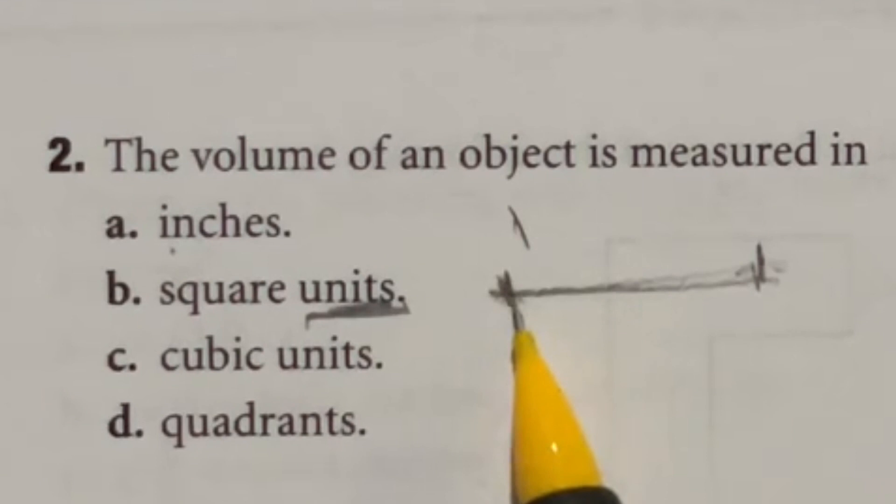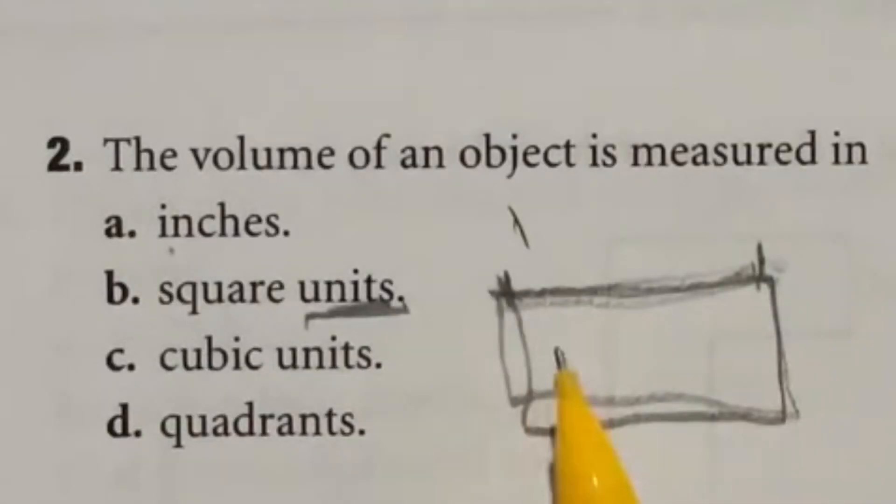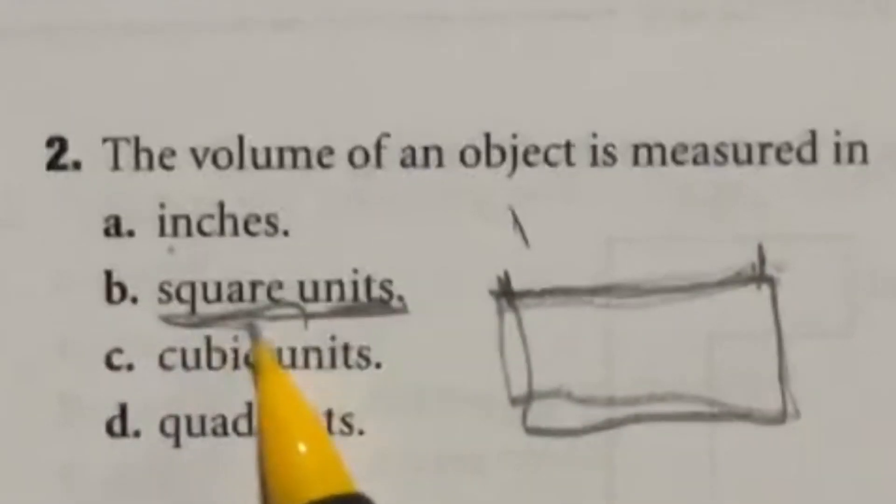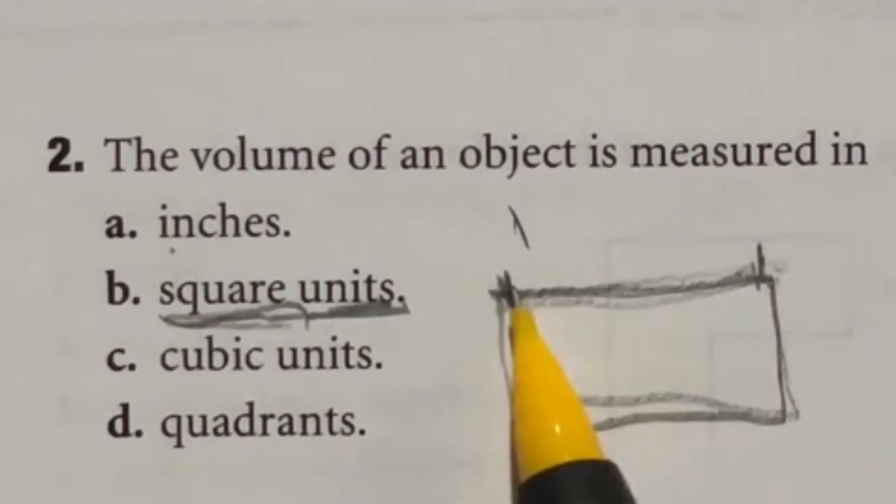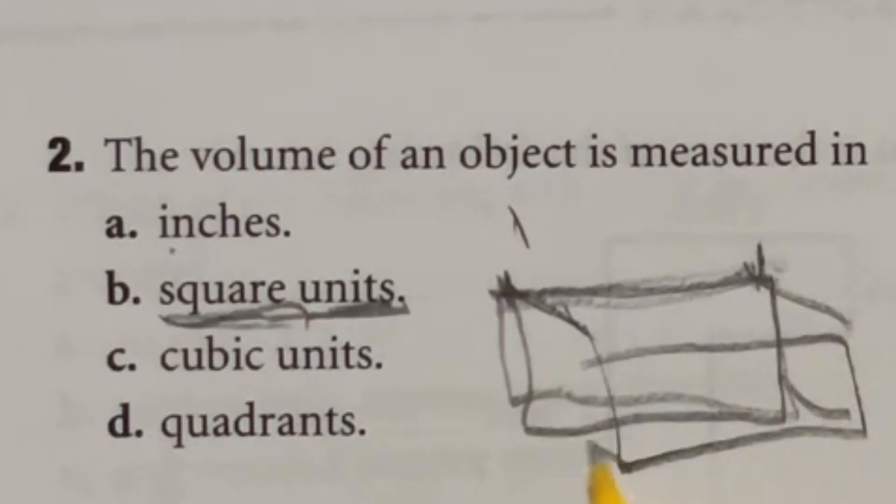Once you move to a second dimension, so something like a square thing now instead of a line, then we're going to start talking about squared units instead. Now once that becomes three dimensional here, that is when we got to move up again away from the squared and into our cubic units. So in this case, the volume, which is a three dimension figure would be C, cubic units.